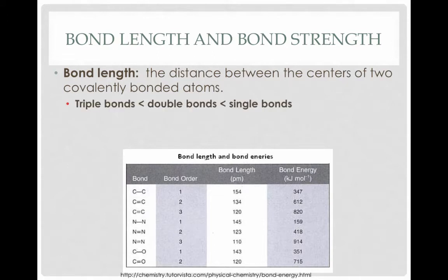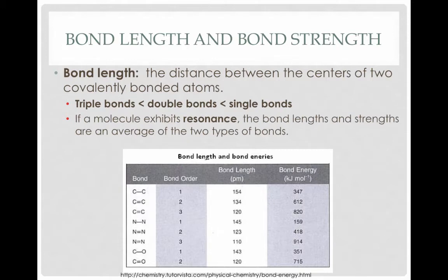What you may have found is that triple bonds tend to be shorter than double bonds, which are shorter than single bonds. Likewise, triple bonds tend to have higher bond energies, therefore they're stronger than double bonds, which have higher bond energies and are stronger than single bonds. If a molecule exhibits resonance, that means the bond is an average between the double and the single, or the double and the triple, or the single and the triple—so the bond length and bond strength is an average of the two types of bonds.